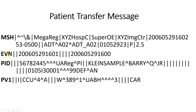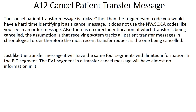Here's an example of an ADT A02 transfer message. The MSH is a standard message header, EVN has just a couple of timestamps, and the PID segment is very basic — patient's name, medical record number, and account number, because all other information is already in the patient's record. In PV1, you can see the patient went from CCU bed 4 to West 389 bed 1 at the University of Alabama Birmingham Hospital, in the cardiology service — so from the CCU to a regular floor.